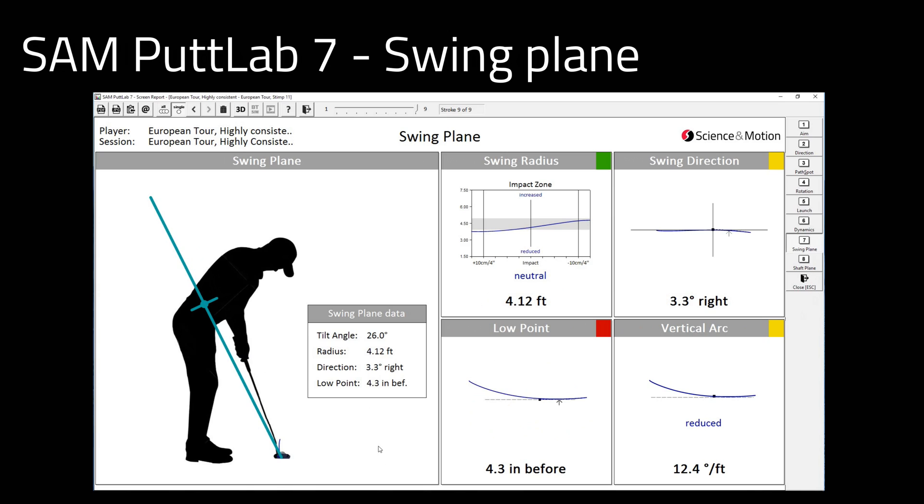The swing plane is a fit of your putter path into a perfect rotational movement. On the right side, you see other results for the calculated swing plane. You can also see that in PuttLab 7 we now have the option to display results in imperial units such as feet or inches.